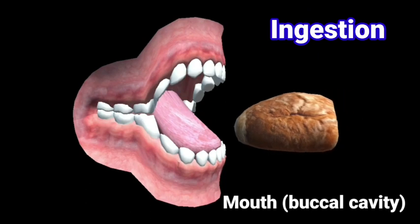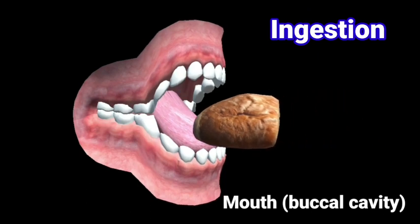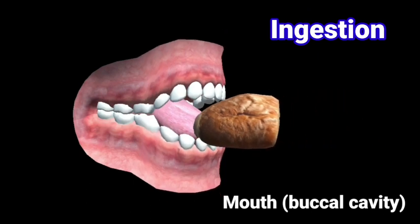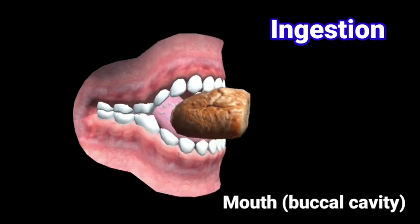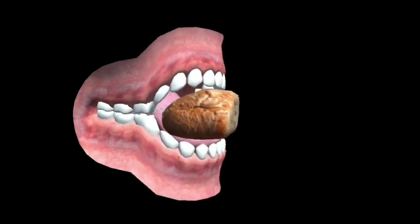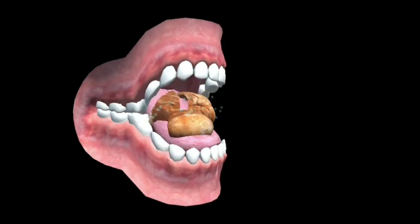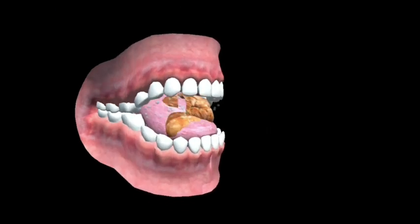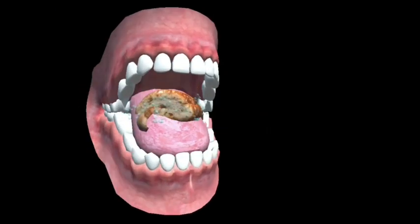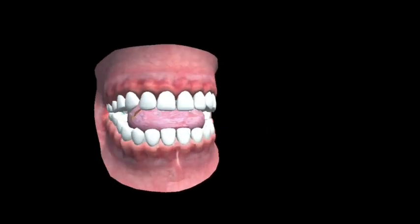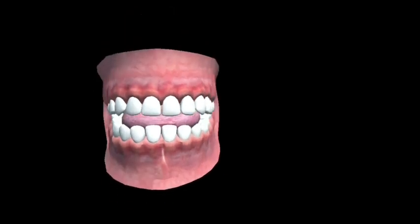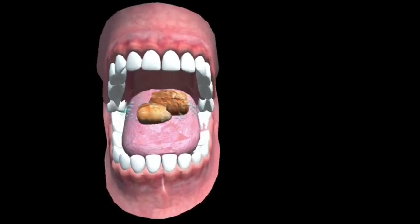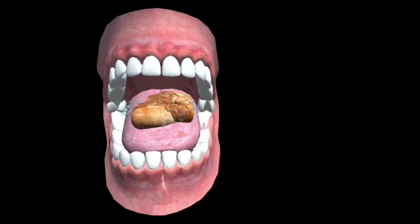Mouth and buccal cavity. The process of ingestion starts from the mouth or buccal cavity. As we ingest food, the salivary glands present in the mouth start its digestion. The teeth present in the buccal cavity cut the food into small pieces by chewing and grinding it.